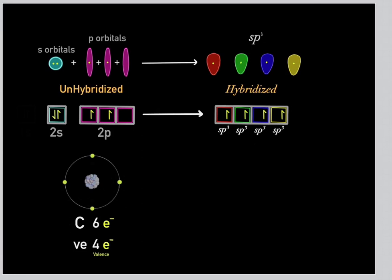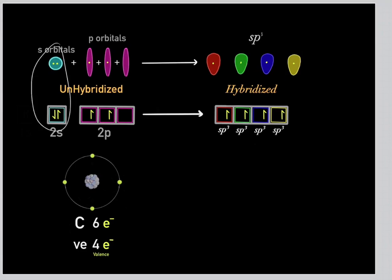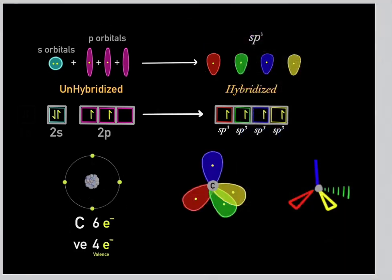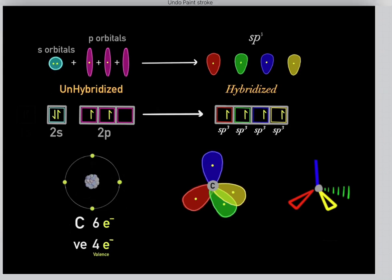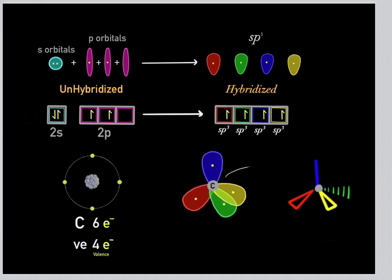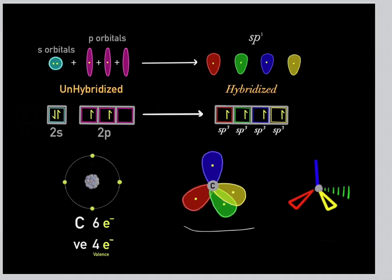The first type of hybridization is sp3 hybridization. Instead of having one s orbital and three p orbitals, all these orbitals fuse and hybridize to form four sp3 hybridized orbitals. This carbon goes through sp3 hybridization, and instead it has four sp3 hybridized orbitals where you'll find the electrons. They form this very specific tetrahedral geometry. So this would be an sp3 hybridized carbon.